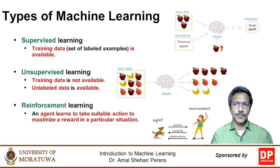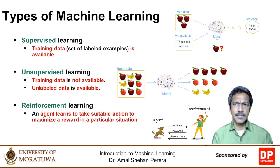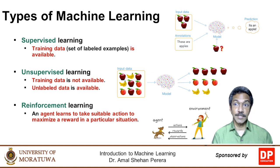Reinforcement learning is where we get an agent or system to continuously learn based on the rewards and punishments it gets from the environment. It is similar to how we would train a dog to listen to our commands by rewarding it when it behaves well and giving small punishments when it goes astray.